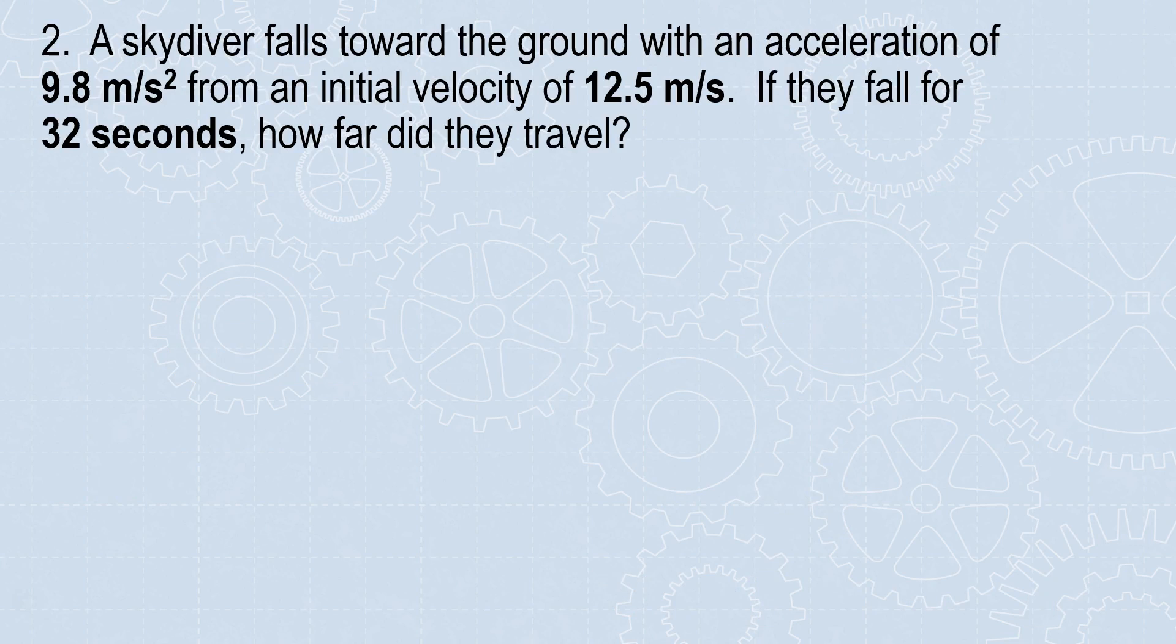Question 2: A skydiver falls toward the ground with an acceleration of 9.8 meters per second squared from an initial velocity of 12.5 meters per second. If they fall for 32 seconds, how far did they travel?